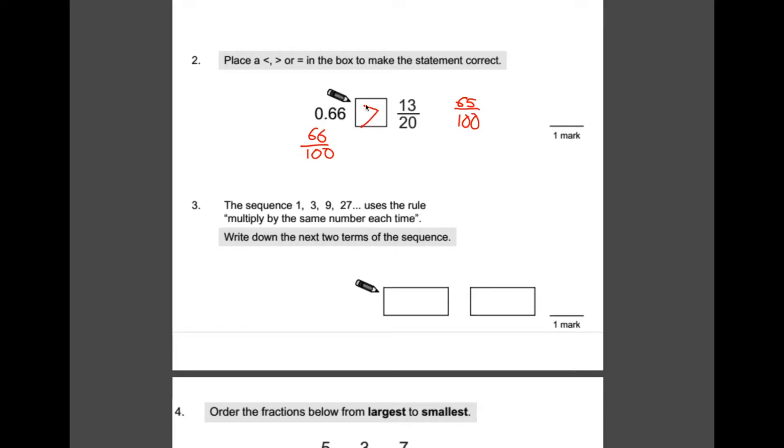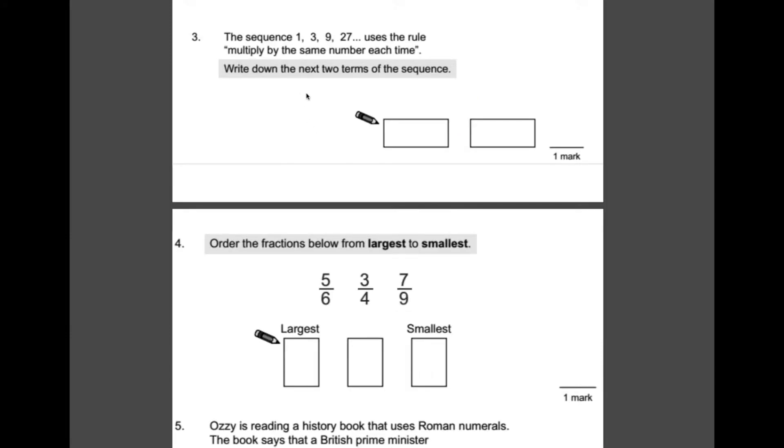Number 3, the sequence 1, 3, 9, 27, uses the rule multiplied by the same number each time, write down the next two terms. So, looking at what we've got, we had a 1 and it turned into a 3, so we've obviously multiplied that by 3. In order to get to 9, we've also multiplied by 3, so it looks like we're just multiplying by 3 each time. So, in order to get the next two terms, we just need to multiply 27 by 3. So, let's have a go at doing that here.